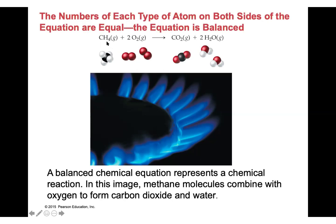Looking at hydrogen: I have four as a subscript of hydrogen, meaning four hydrogens on the left side. On the right side I have a coefficient of 2 in front of H₂O and a subscript of 2 for hydrogen — multiplying those gives four hydrogens on the right side. So we have four hydrogen on both sides.